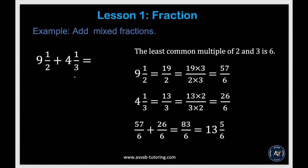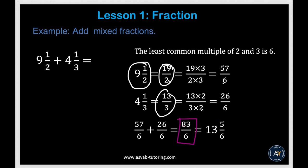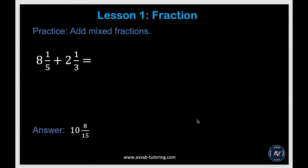Now we'll learn how to add mixed fractions. To add mixed fractions, first convert each mixed number into an improper fraction. For example: 9 times 2 is 18 plus 1 is 19 over 2, and the other gives 13 over 3. Then find the common denominator, find equivalent fractions, and add them to get 83 over 6. Convert the improper fraction to a mixed number: 13 and 5 over 6. Try the practice problem, and if you don't get this answer, go back to the previous example to clear your concept.